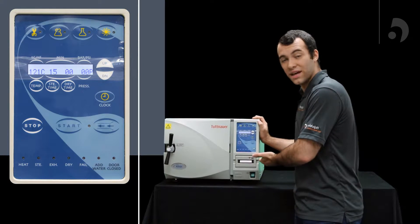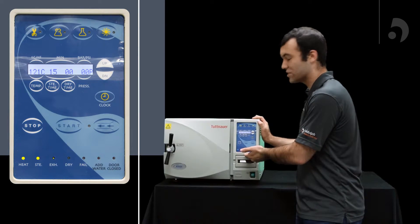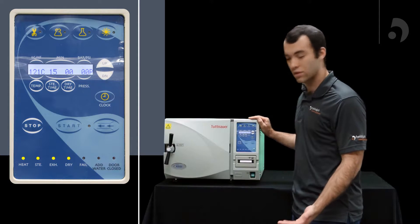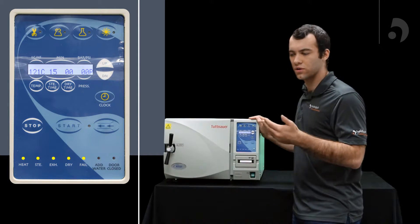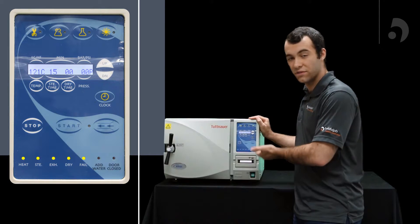We've also got our indicator lights on the bottom. The first four represent what stage of the cycle you're in. Then there's the fail light, which is in case your unit fails prematurely or if you click the stop button.